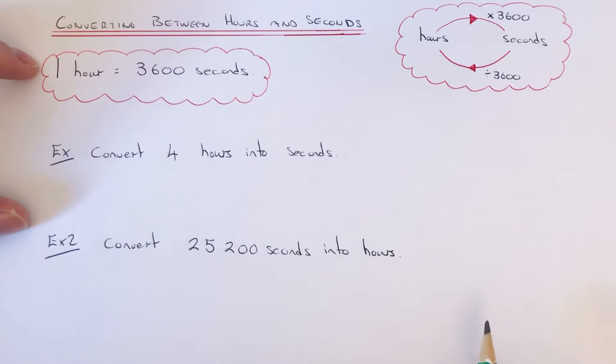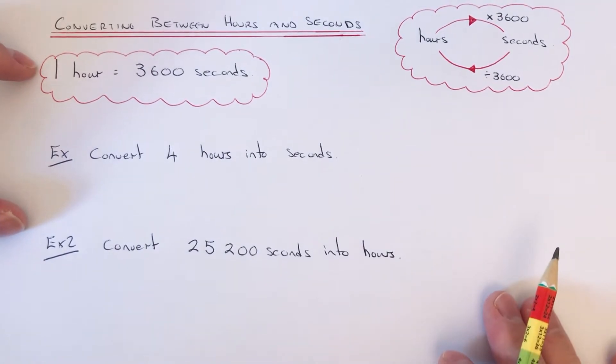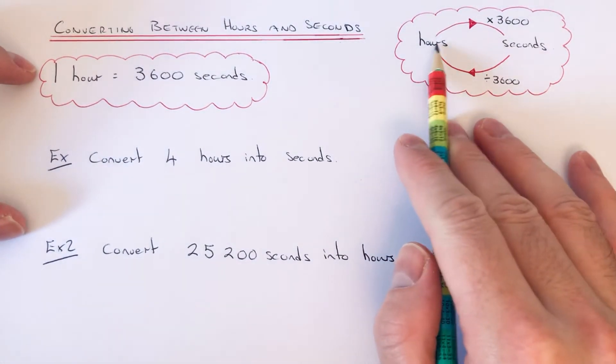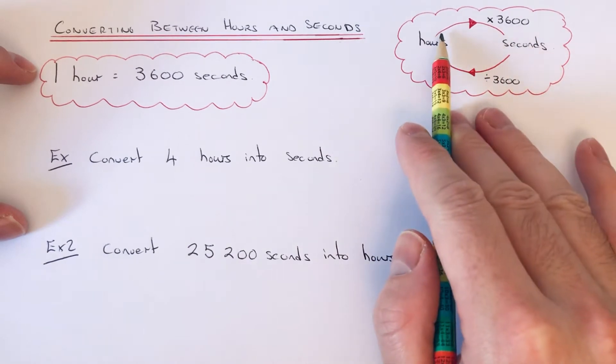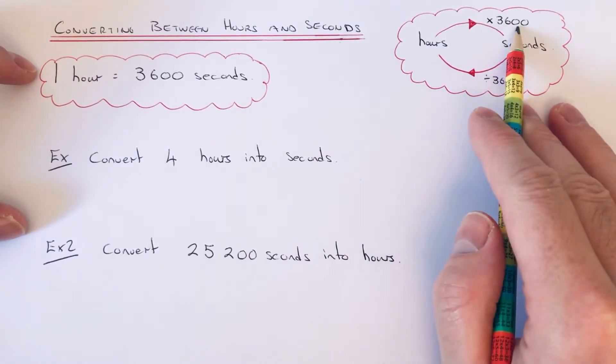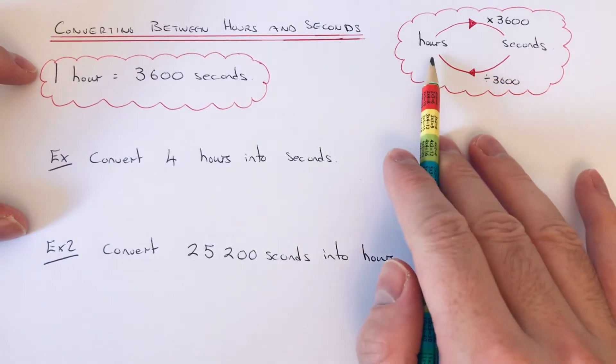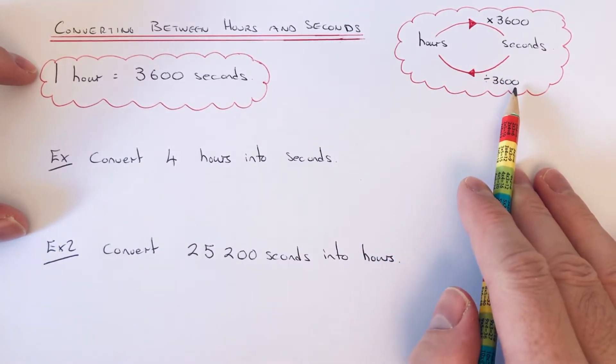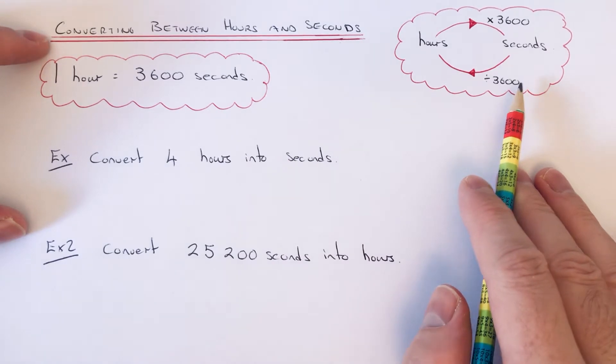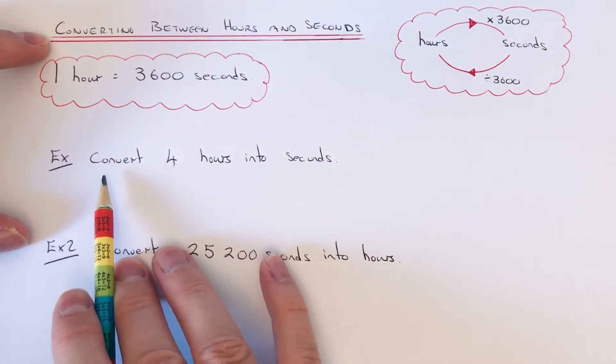So if you need to convert hours into seconds, you're going to multiply the number by 3600. And if you're converting seconds back into hours, then divide by 3600. So let's have a look at the two examples that we have.